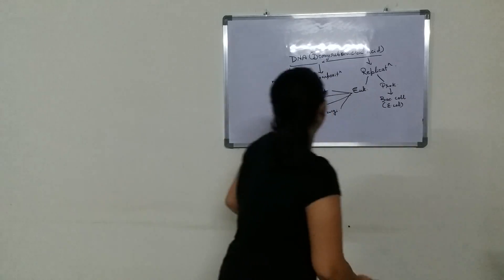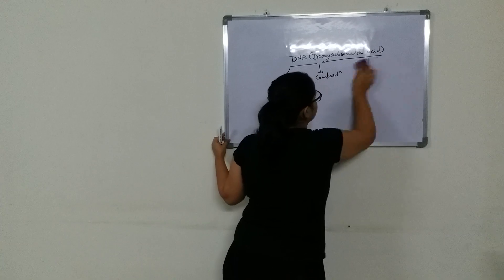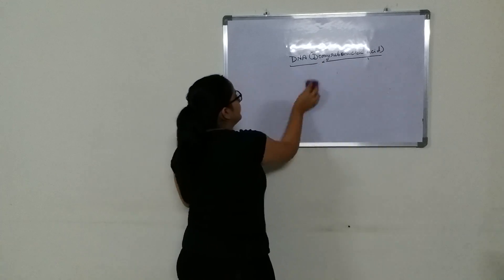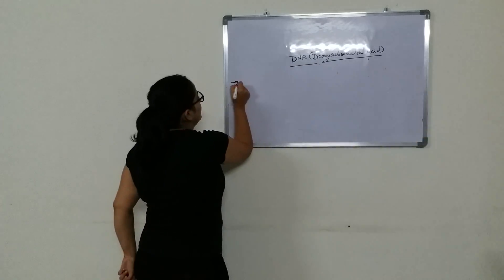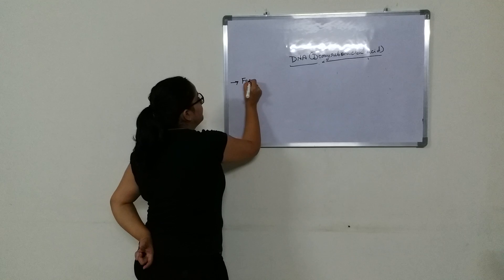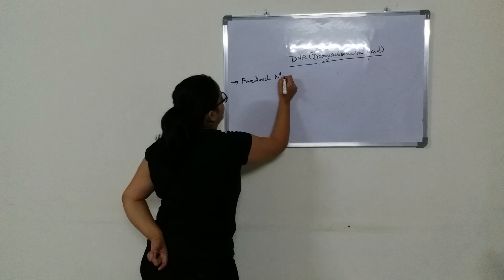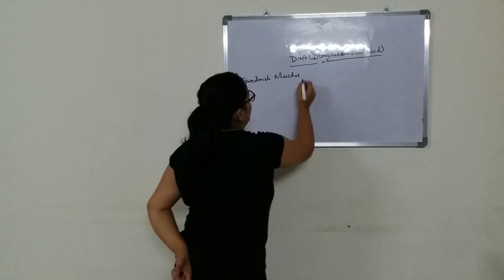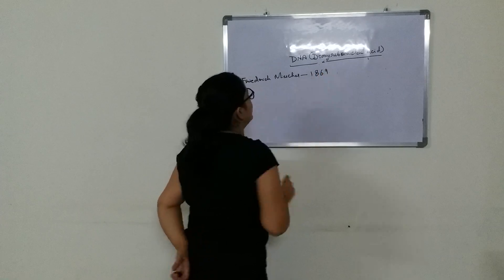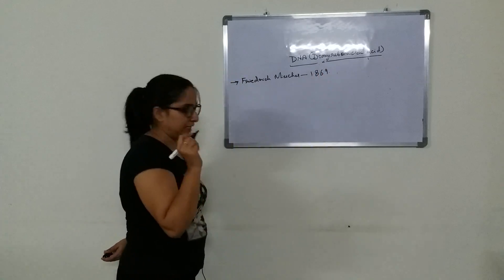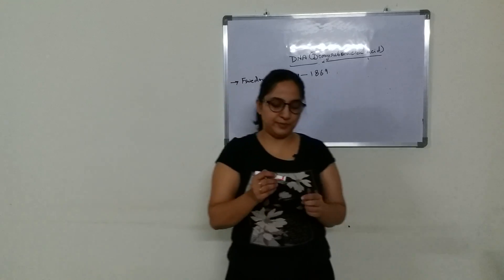There was a scientist called Frederick Mischer who first discovered DNA. In 1869, he first called it deoxyribonucleic acid and said that DNA is a hereditary material.